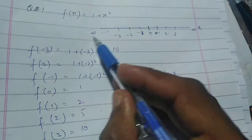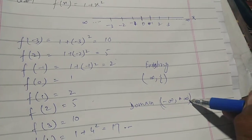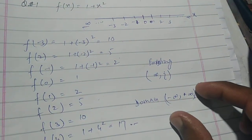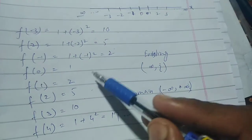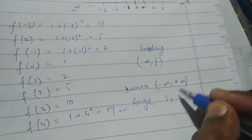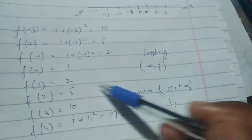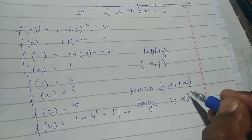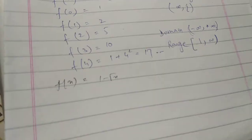The domain is (−∞, +∞), which means all real numbers — neither negative infinity nor positive infinity is included, so we use open interval notation. Now for the range: looking at our computed values, the minimum value we got is 1, and there is no finite maximum — it can go to infinity. So the range is [1, +∞), meaning 1 is included. That is the domain and range for question number one.